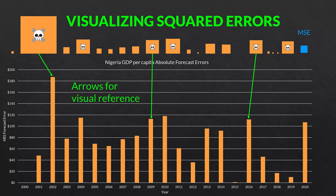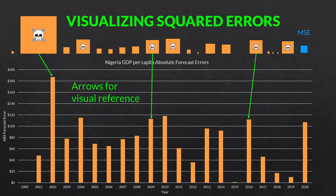I put little skulls on all the large errors to show how much more they are penalized. For example, look at the square with the second skull and crossbones: the forecast error is about $118. Look to the right where the forecast error is about $70 — a little less than half. Look at the area of the two corresponding squares and see how much larger the $118 square is. That's because the larger the error, the more penalized it is in mean square error. If we take the average area of all those squares, we end up with the blue square on the right — that's the mean squared error.